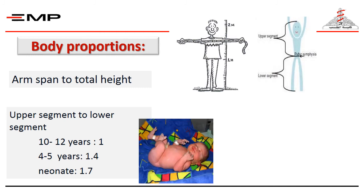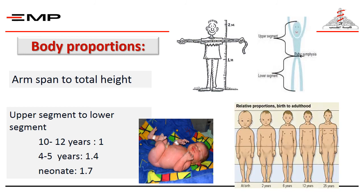The body proportions in neonates are totally different from older children. In neonates, the head constitutes one-fourth of body height, and the upper segment is nearly double the lower segment.